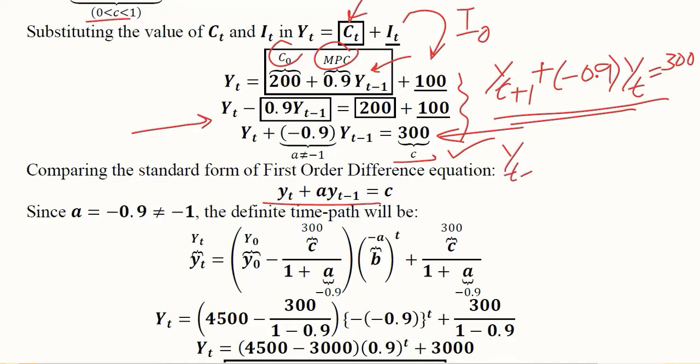However, this is the standard form that we are trying to use here for the sake of comparison: yₜ + ayₜ₋₁ = c. Now this is a, and we have extracted its value by comparison. Here is -0.9, which is definitely not equal to -1, so this formula is applicable.